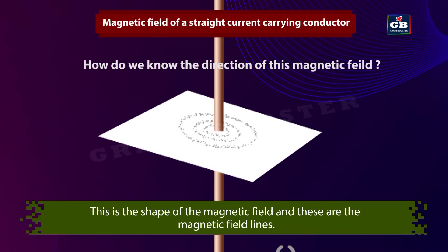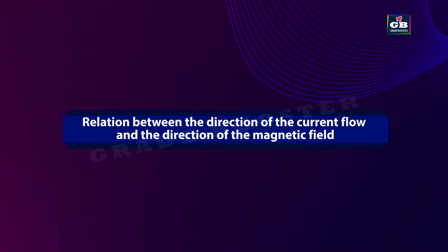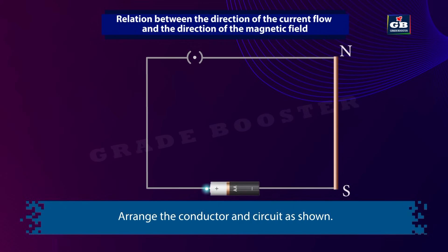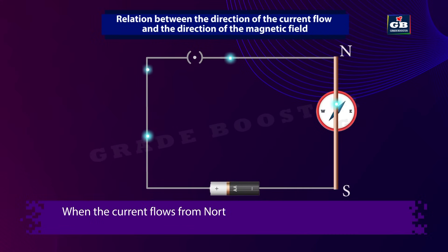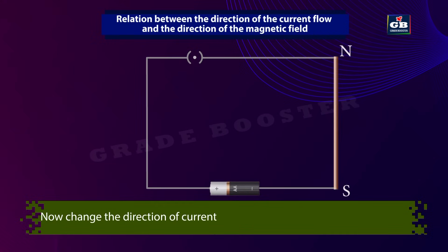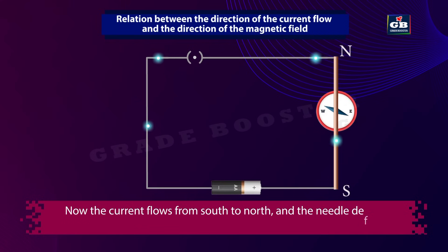To know the direction of this magnetic field, place a magnetic compass on the magnetic field lines. When the current flows from north to south, the compass needle deflects towards east. When the direction of current is reversed to flow from south to north, the needle deflects towards west. That means, if the direction of current flow changes, the direction of the magnetic field also changes.